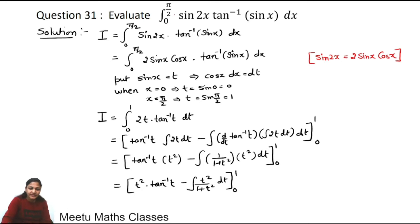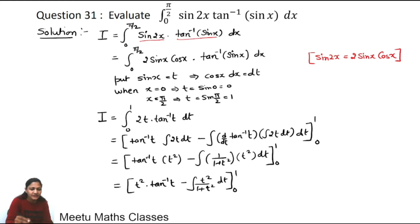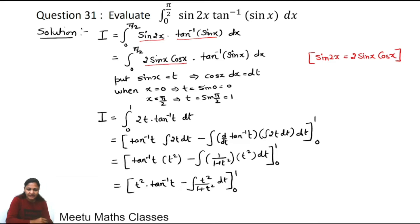Evaluate integral 0 to π/2 of sin2x · tan⁻¹(sinx) dx. Our question is sin2x · tan⁻¹(sinx) dx. First of all we know the formula for sin2x, that is 2sinx·cosx. So replace sin2x by 2sinx·cosx. Now you can observe that cosx is written in the numerator, so we can substitute sinx as t.